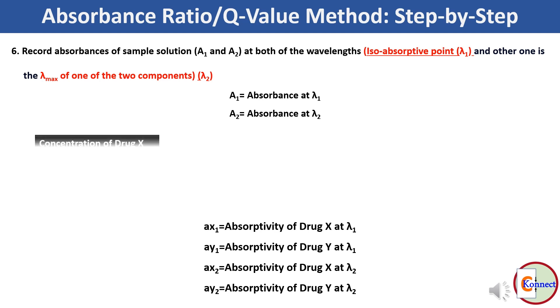Now you can find out concentration of drug X by using this formula: (Qm - Qy) / (Qx - Qy) multiplied by the ratio of A1 and aX1.